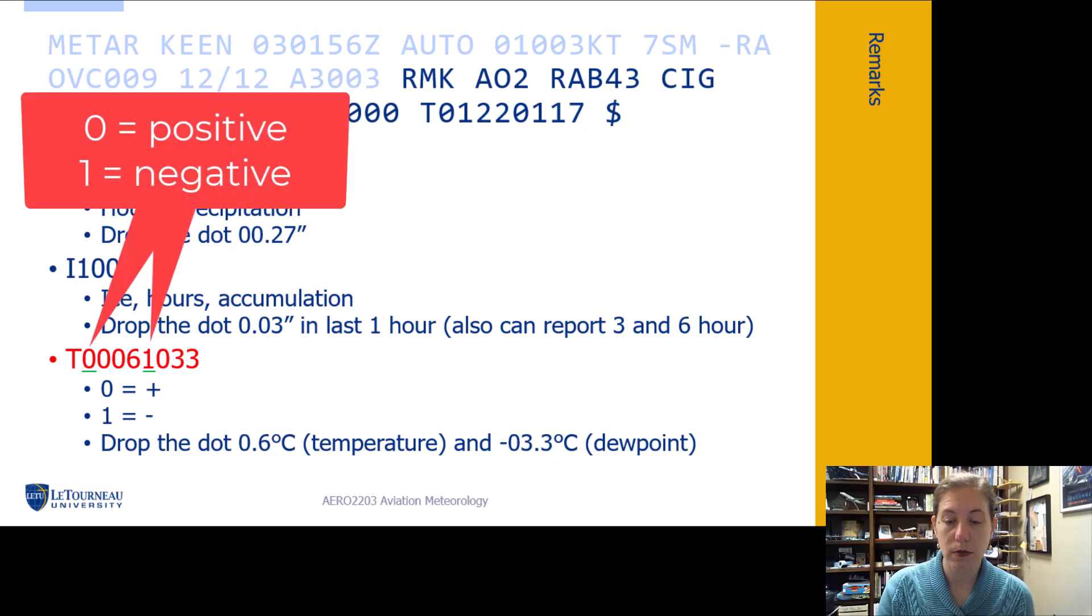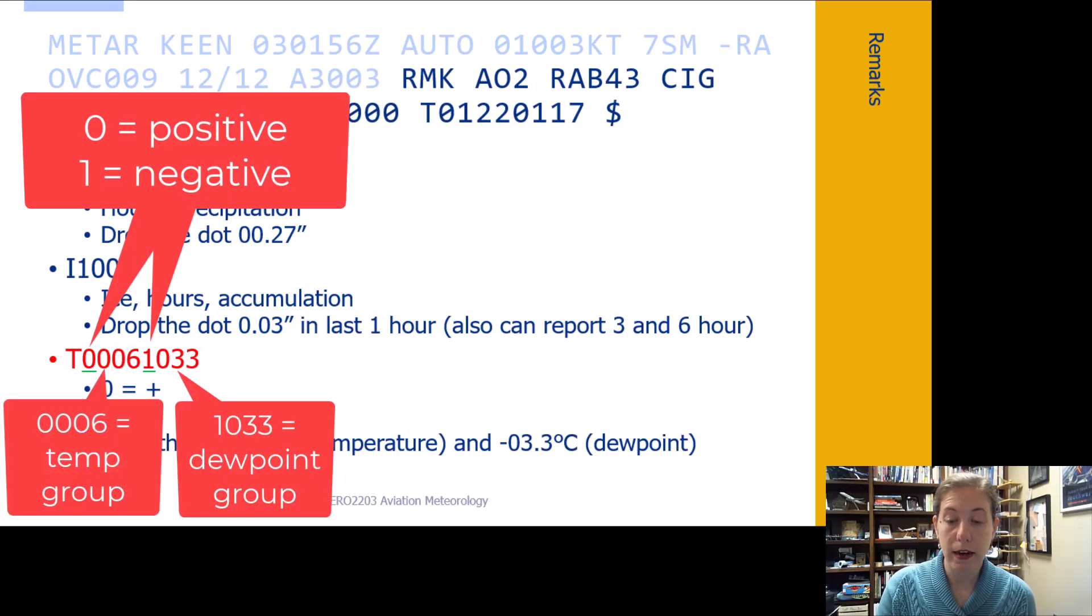So essentially this first number right here is going to tell us whether it's a positive or a negative temperature and dew point. If it says zero, then it's positive. If it's one it's negative. And again, what happens here is we have a three group, three number group where we have number, number, number, and they have dropped the dot out again, like the other ones. And then we have a dot that we'd have to put back here.